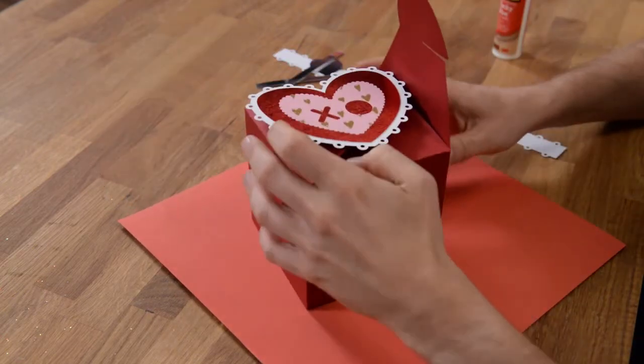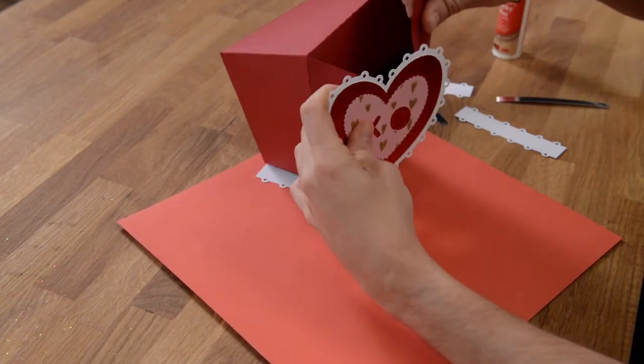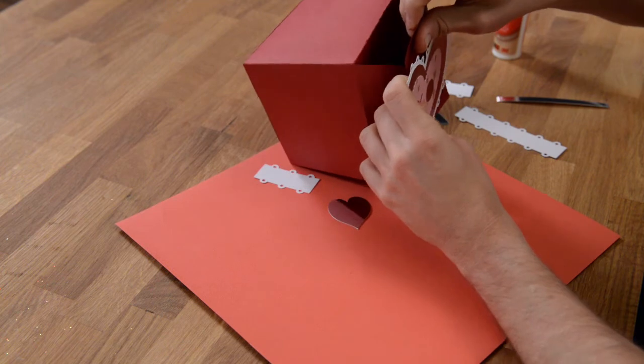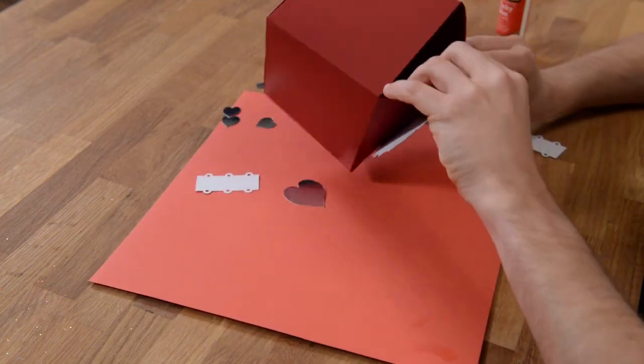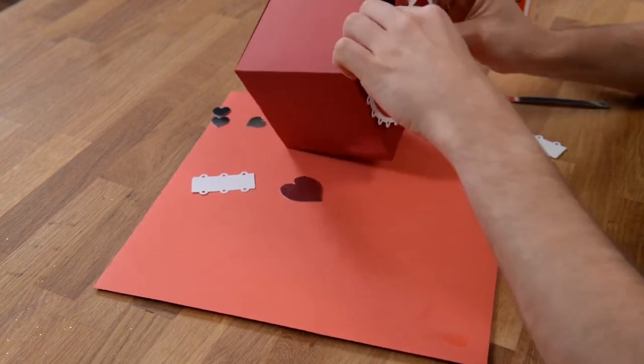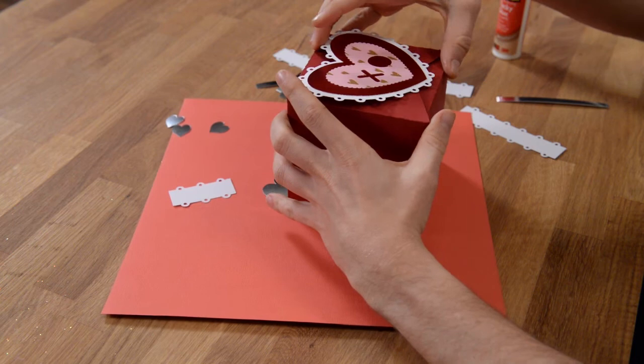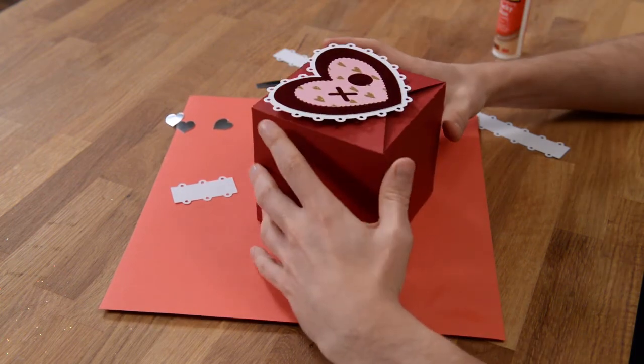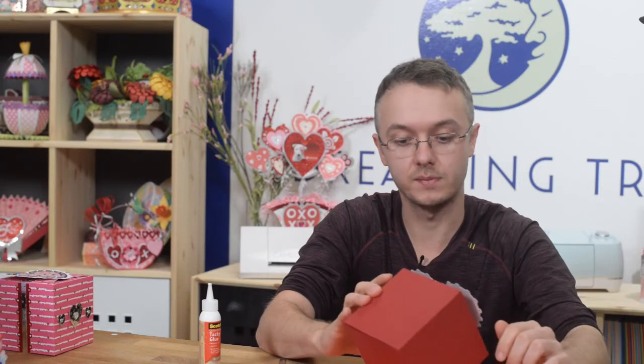So to open and close the box, you're just going to take and just slide the slit over the other slit. And then it just closes like that. And you've got a super pretty, super simple little box for Valentine's Day to fill with some really special treats for that special someone.